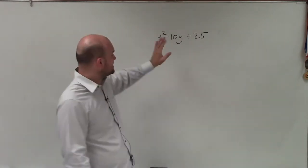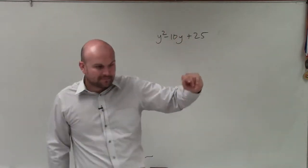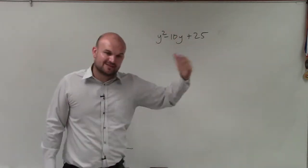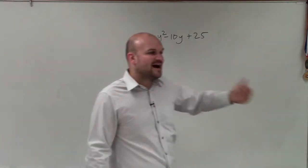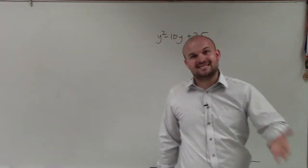y² is obviously a square term, that's y times y. But can 25 be written as an integer multiplied by itself to give you 25? Yes, 5 times 5.